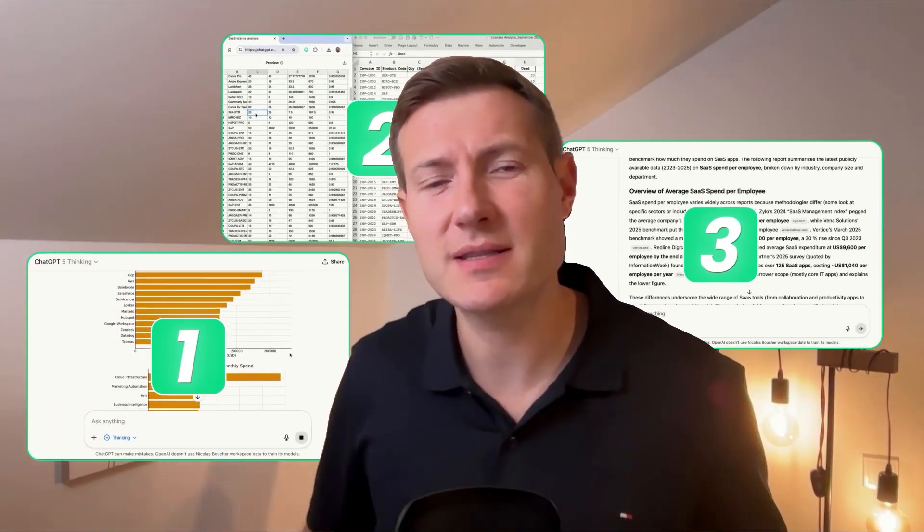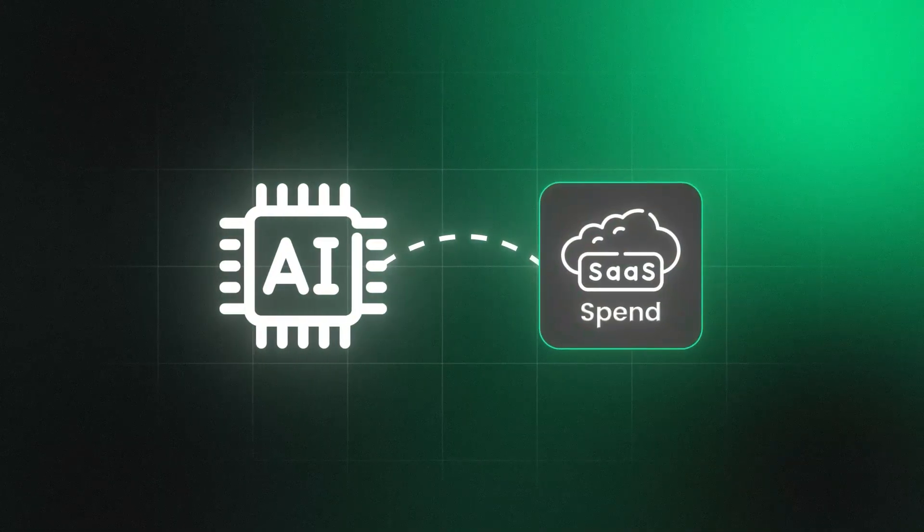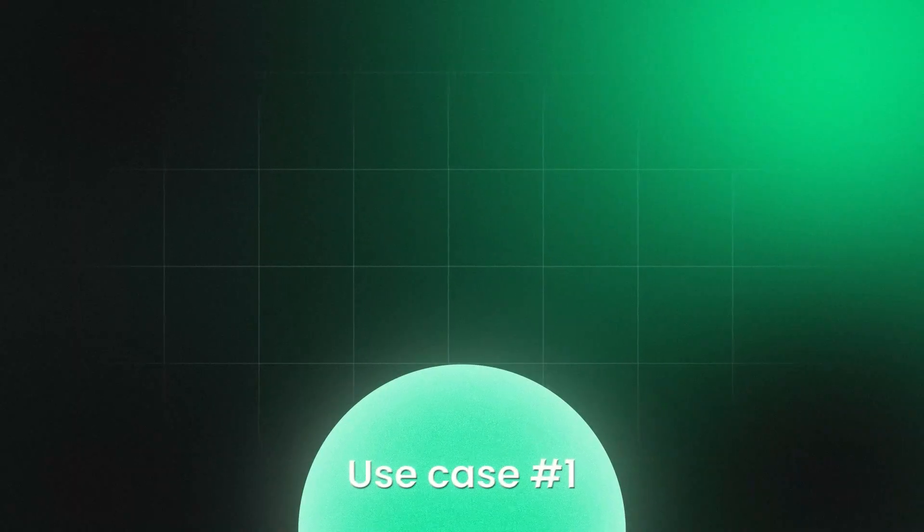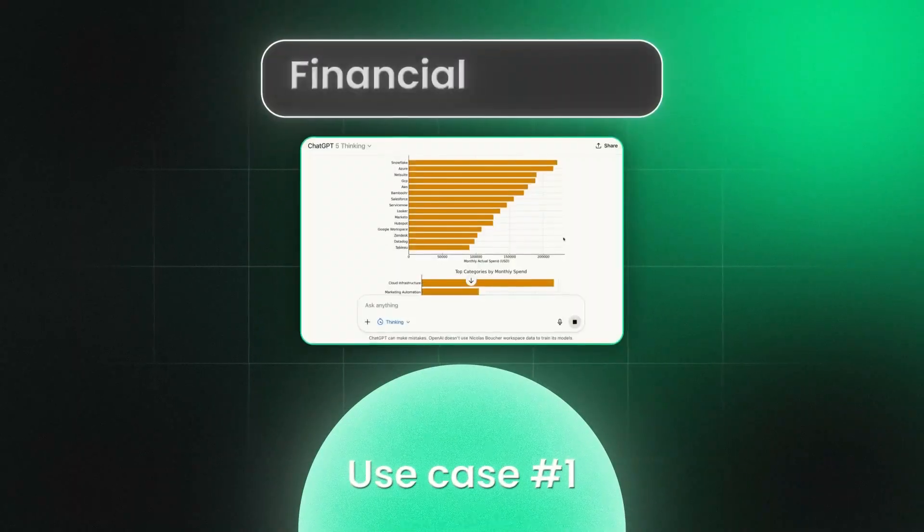Let me show you three use cases on how you can use AI if your SaaS spend is a big product. In this video, I'm going to show you practically when we have something to solve in finance, how we can use AI everywhere. The first use case will be directly how to use AI for financial analysis, and here we are going to check how we can use AI to identify a strategy to decrease our SaaS spend.